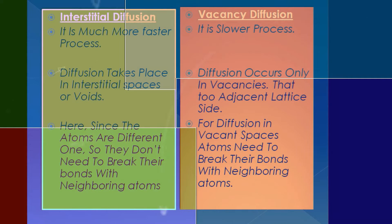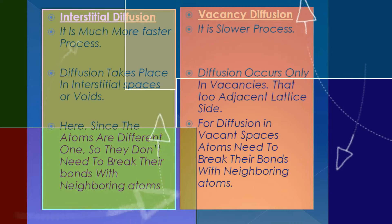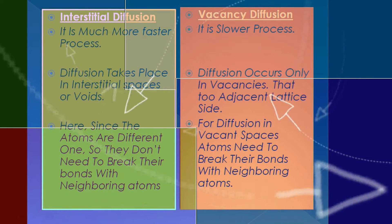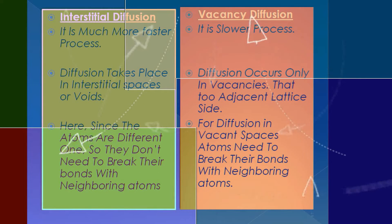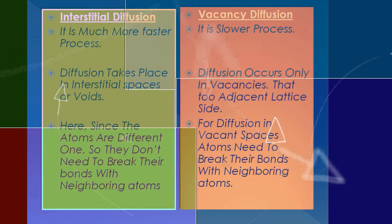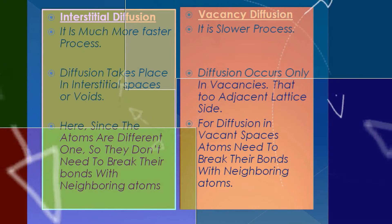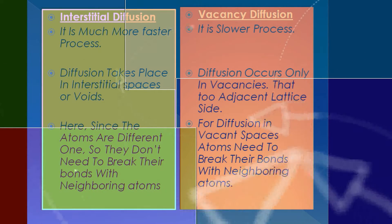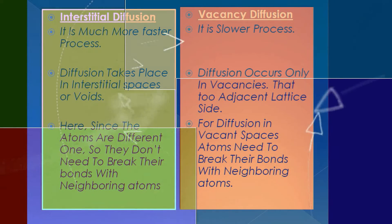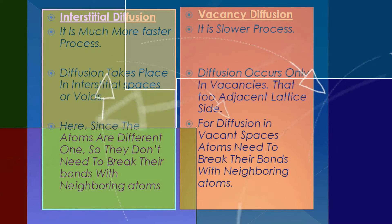Let's see the next point. Because interstitial diffusion can occur at a lower temperature, we can add the atoms from outside without needing to break bonds, so this process works even at lower temperatures.